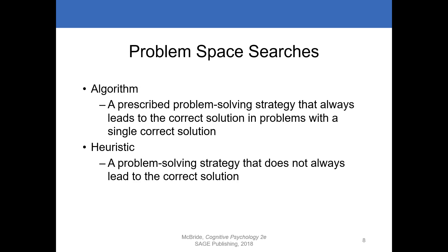There are different ways we search for solutions to problems. One is an algorithmic approach — a prescribed problem-solving strategy that always leads to the correct solution for problems with a single correct answer. Think math and order of operations: you follow the steps and get the right answer. However, we often take a heuristic approach — a strategy that does not always lead to a correct solution, more like a general way of approaching something rather than a strict recipe.